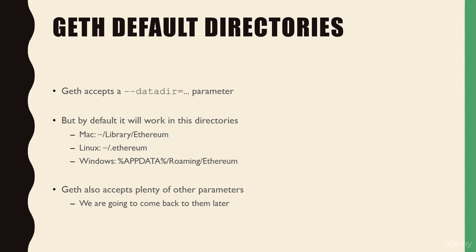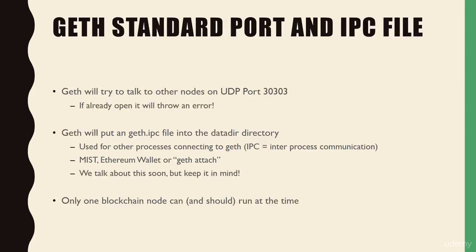Geth also accepts plenty of other parameters which we will use later on. When you open Geth, it will try to talk to other nodes on UDP port 3033. A common issue is having two nodes running at the same time, which will throw an error. If it says it cannot communicate on or open port 3033, the first thing to check is that the port is not already in use. Geth will also put an IPC file into the data directory, used for other processes connecting to Geth. An IPC file is an inter-process communication file, and programs like Mist, the Ethereum wallet, or the Geth console will try to connect to it.